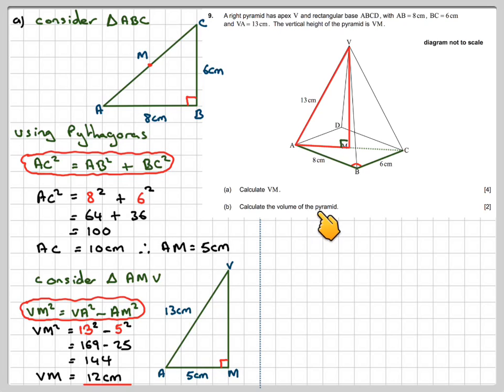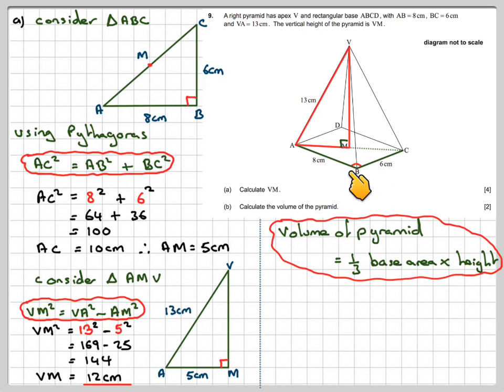In order to calculate the volume, the volume of the pyramid is going to be one third of the base area times the height. The base area is going to be 6 times 8, which is 48. So V will be one third times 8 times 6 times the height, which is 12.